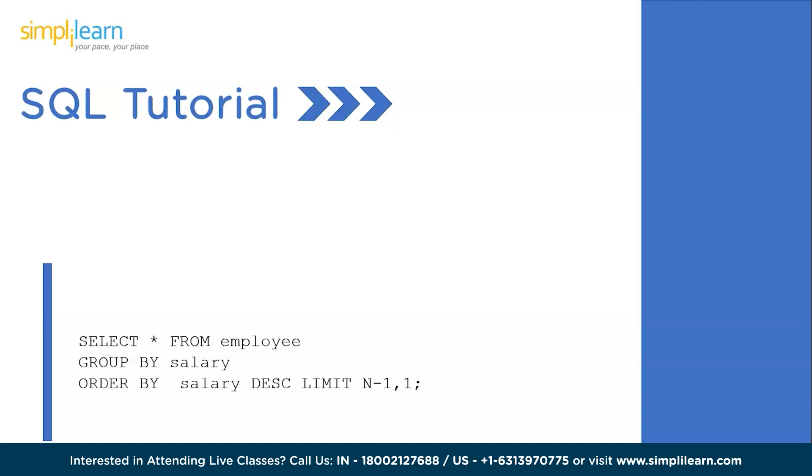Then LIMIT N-1. Let's say you're supposed to find the fifth highest salary - then the formula will be 5-1. And LIMIT 1, that is you just want one single row to be displayed on your output. So that's the reason we'll be giving LIMIT as 1. This is the simple syntax you will be following.